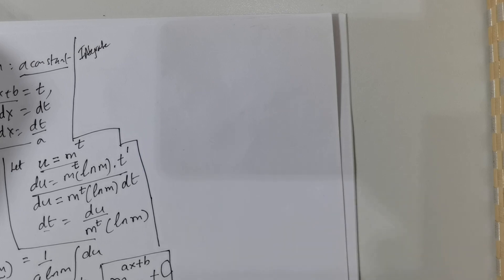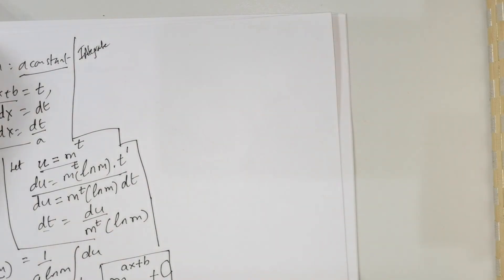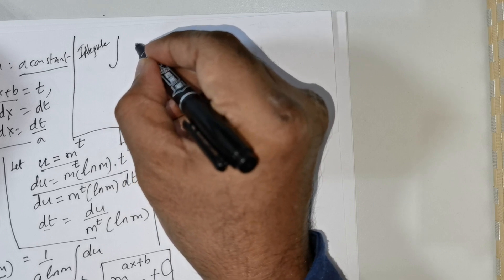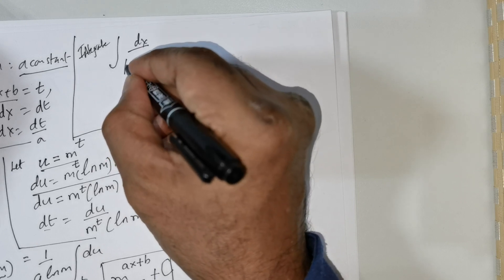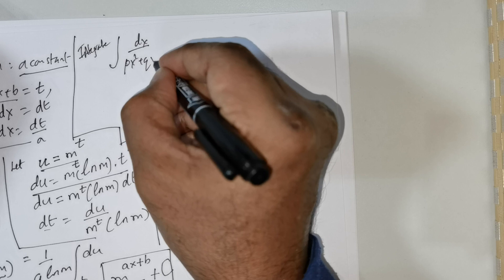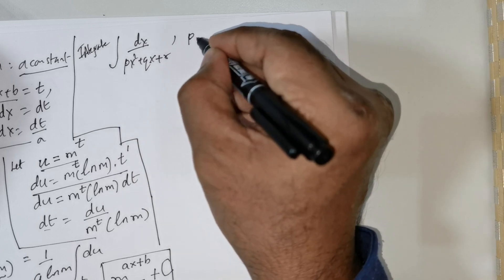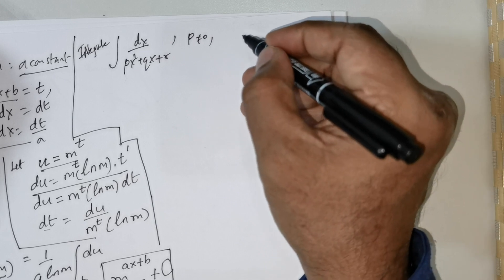Welcome students, we've been given an interesting integral. We are asked to integrate the integral dx over px squared plus qx plus r, such that p is not equal to 0.